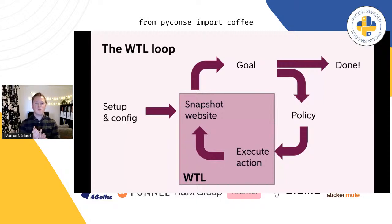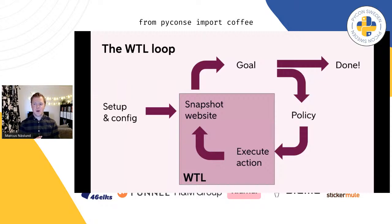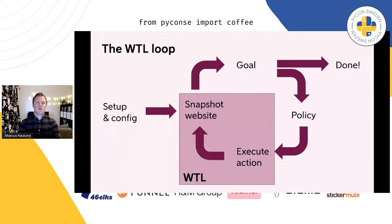We only need to define three key components. First, a configuration or setup that specifies the environment: things like the starting URL, if we're using a desktop or mobile browser, if we want debug information, if we're using a proxy, etc. Second, we need to define a goal function — something simple like reaching a particular URL, or finding a particular element, or a more complex ML model that says we are done based on the current page state. Third and most important, we need a policy function — terminology from reinforcement learning — essentially a function that takes the current observations of the page and returns the next action to take. With those components, WTL handles all the executing of actions, navigation, browser interactions, data storage, logging, etc.